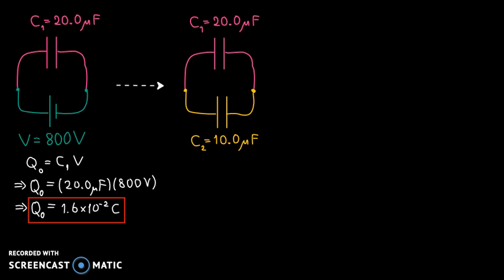Next, we want to calculate the potential difference across each capacitor after the capacitors are connected. The answer is that those values are equal. If you look at these two capacitors now, they're connected in parallel — between the same two terminal points — so they have the same potential difference. But we don't know how the charge is redistributed among the two capacitors, so first we're going to find that out and then use that information to calculate the new potential difference.